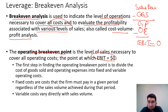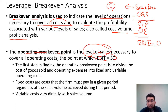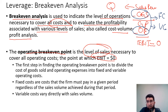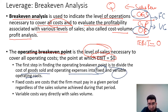To find the break-even point, we need to determine the level of sales — specifically the quantity, the number of units sold — that results in EBIT equal to zero. This means all expenses are covered. The costs covered include cost of goods sold and operating costs, which are divided into fixed costs and variable costs. The first step is to divide cost of goods sold and operating expenses into fixed and variable operating costs. Fixed costs must be paid regardless of sales volume, while variable costs vary directly with sales volume.